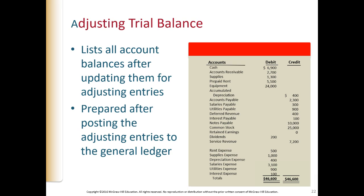After you make all the adjusting entries in the general journal and post those to the ledger accounts, you bring all balances up to date and then prepare what's called an adjusted trial balance. You're just checking to make sure that debits equal credits before you move on to prepare the financial statements. We had a trial balance earlier in the previous chapter to check that debits equaled credits before adjusting entries. After making and posting all adjusting entries, you pull off the adjusted trial balance to confirm debits still equal credits.